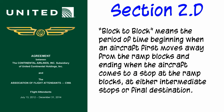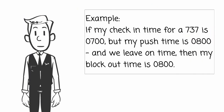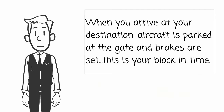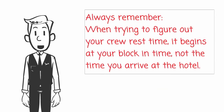For example, if my check-in time for a 737 is 0700 but my push time is 0800 and we leave on time, block out is 0800 — the time the aircraft released the brakes. When you arrive at your destination, the aircraft is parked at the gate and the brakes are set; this is your block in time.